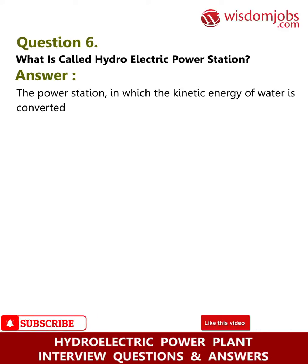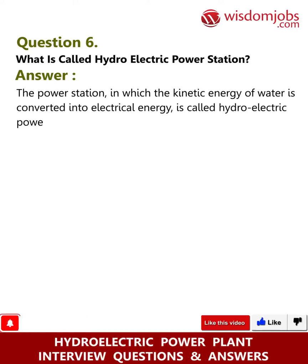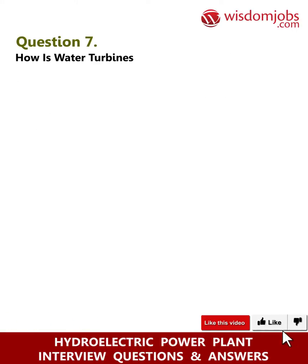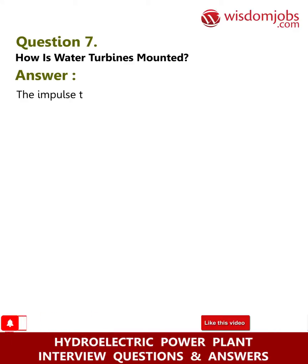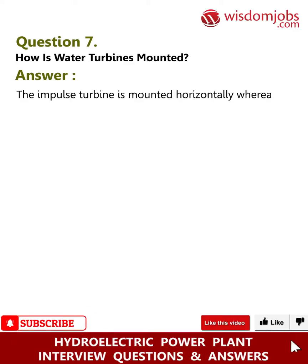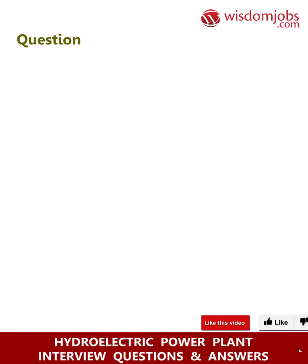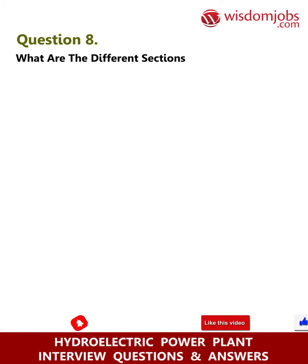Question 6: What is called a hydroelectric power station? Answer: The power station in which the kinetic energy of water is converted into electrical energy is called a hydroelectric power station. Question 7: How are water turbines mounted? Answer: The impulse turbine is mounted horizontally, whereas the reaction turbine is mounted vertically.